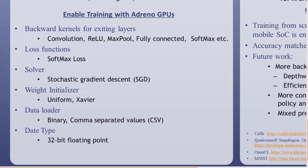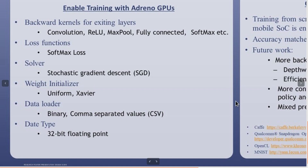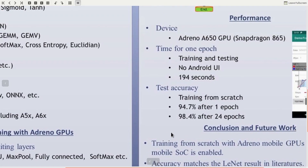To enable training on Adreno GPU, we first added backward operations for some commonly used layers including convolution, ReLU, max pooling, fully connected, and softmax. Because training is a non-linear optimization process, it needs loss and gradient update functions. We added softmax loss and stochastic gradient descent solver. While inference can use pre-computed weights, training needs to initialize network weights, so two popular weight initializers — constant and He — are implemented. Finally, we implemented a data loader that can randomly select data in memory and load them to GPU. The current data type used for training is float32.